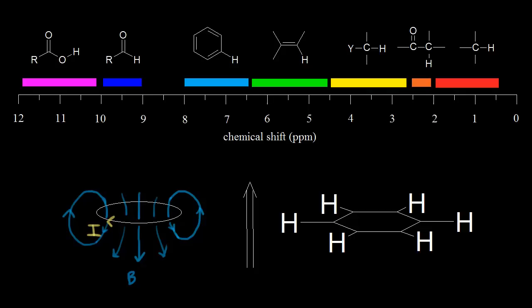When you're talking about current, you're thinking about positive charges moving, but that's not what's happening. We know that electrons are really what are moving, and moving charges create a magnetic field. The electrons are moving in a direction opposite to how we define current. So we have electron density moving this way, and we get a magnetic field.